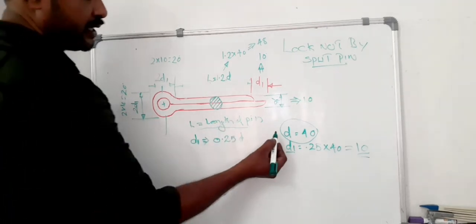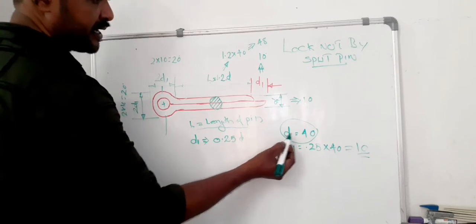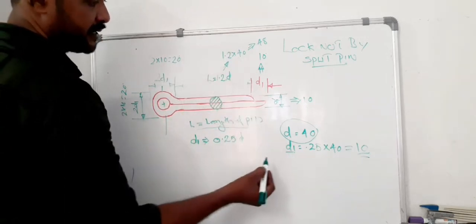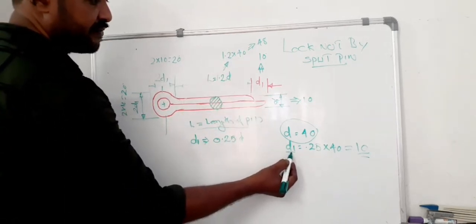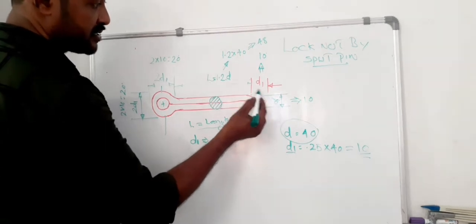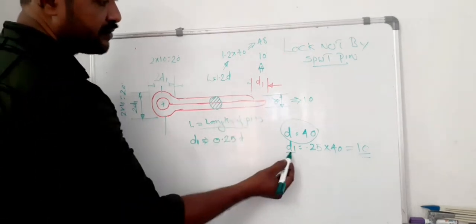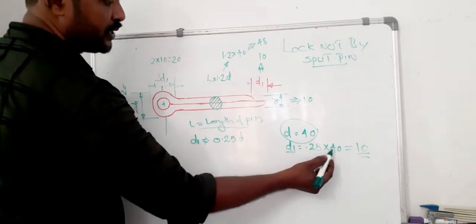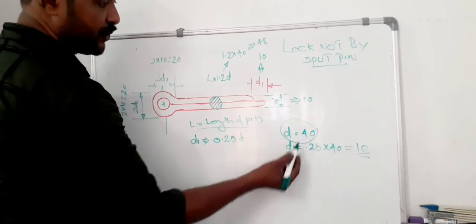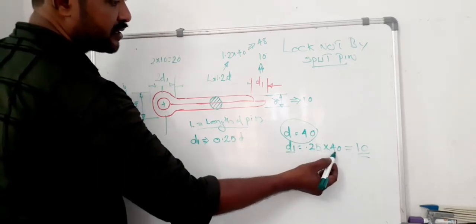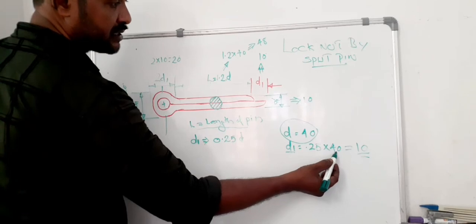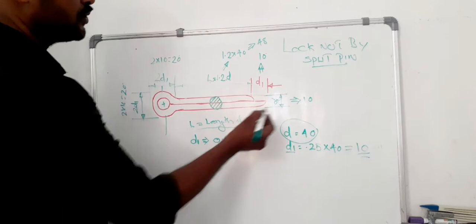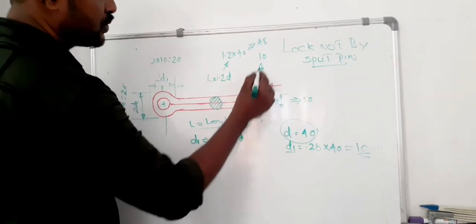If you know the diameter of the bolt that is given, if it is 40, then we can find other parameters. First we have to find out d1. d1 has a value that is a constant times d. That means d is given as 40. Therefore, 0.25 into 40 equals 10 millimeter. So this value is 10, and this value is also 10 millimeter.